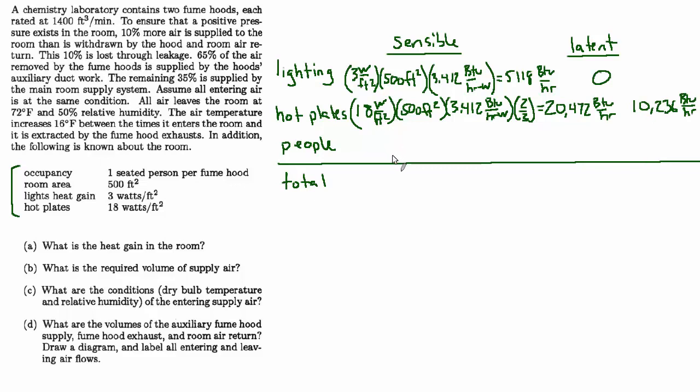And then for the people load, we'll just assume that these are average blended rates. So the average between men and women, the typical number is 330 all in, of which 225 is sensible and 105 is latent. So the sensible piece will be 2 people times 225 BTUs per hour, which is 450. And the latent piece is 2 times 105, which is 210.